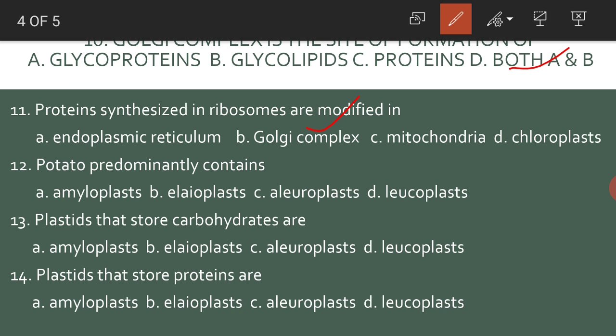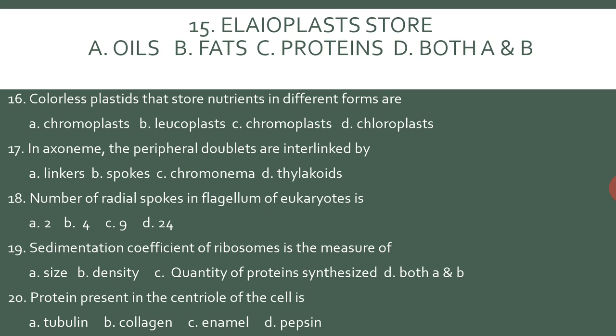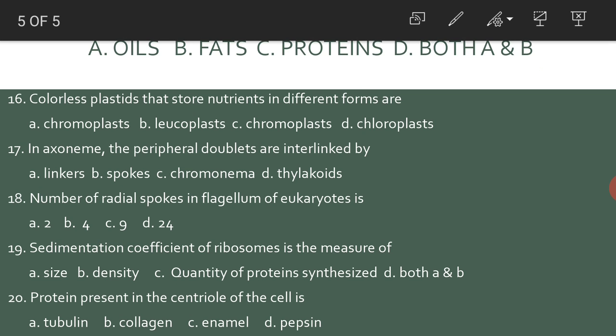Potato predominantly contains amyloplasts, because potato is the richest source of starch. Plastids that store carbohydrates are called amyloplasts. Plastids that store proteins are aleuroplasts. Elaioplasts store both oils and fats.